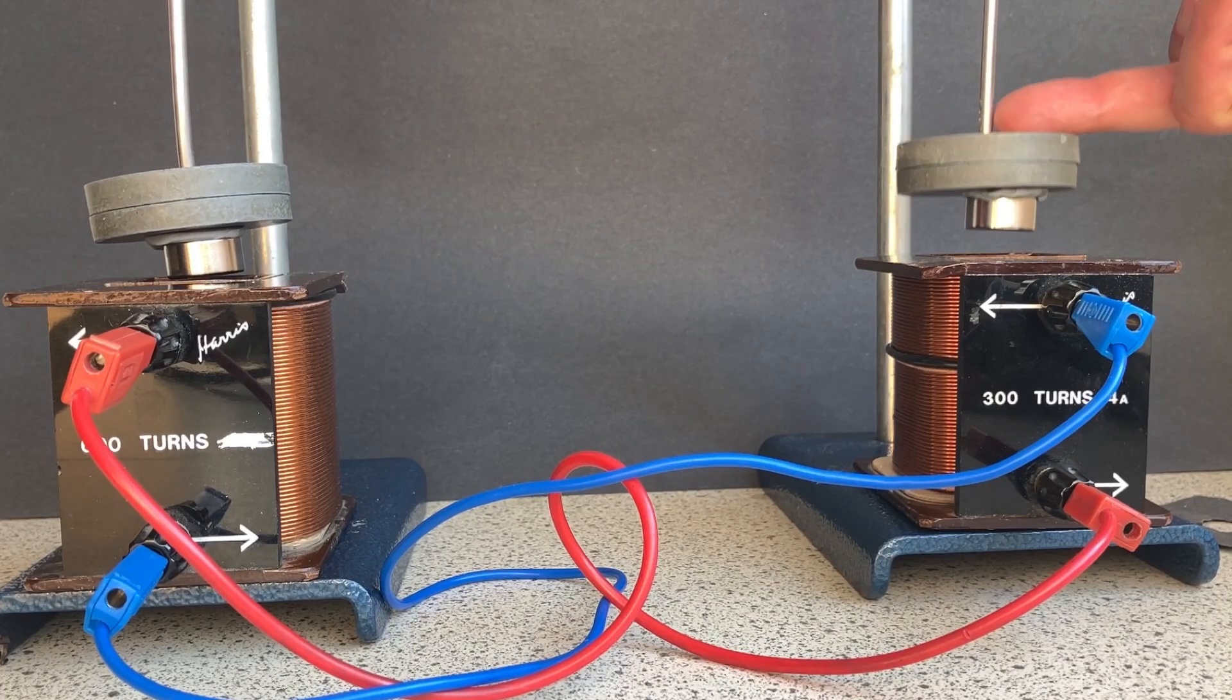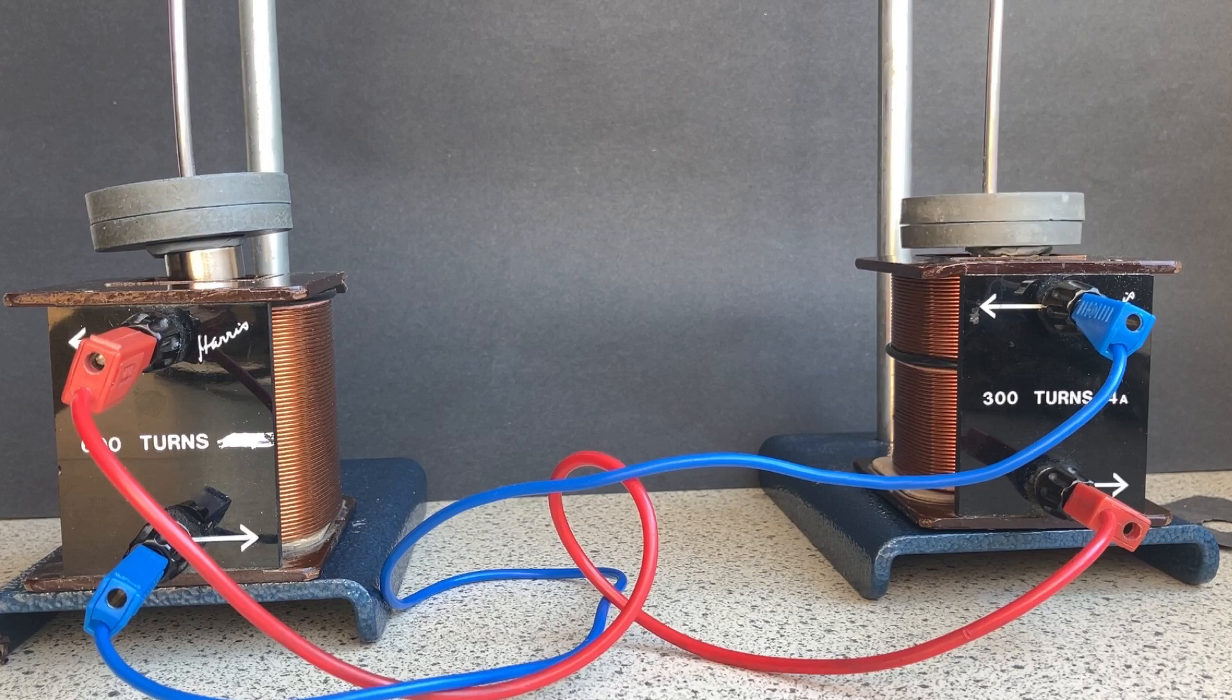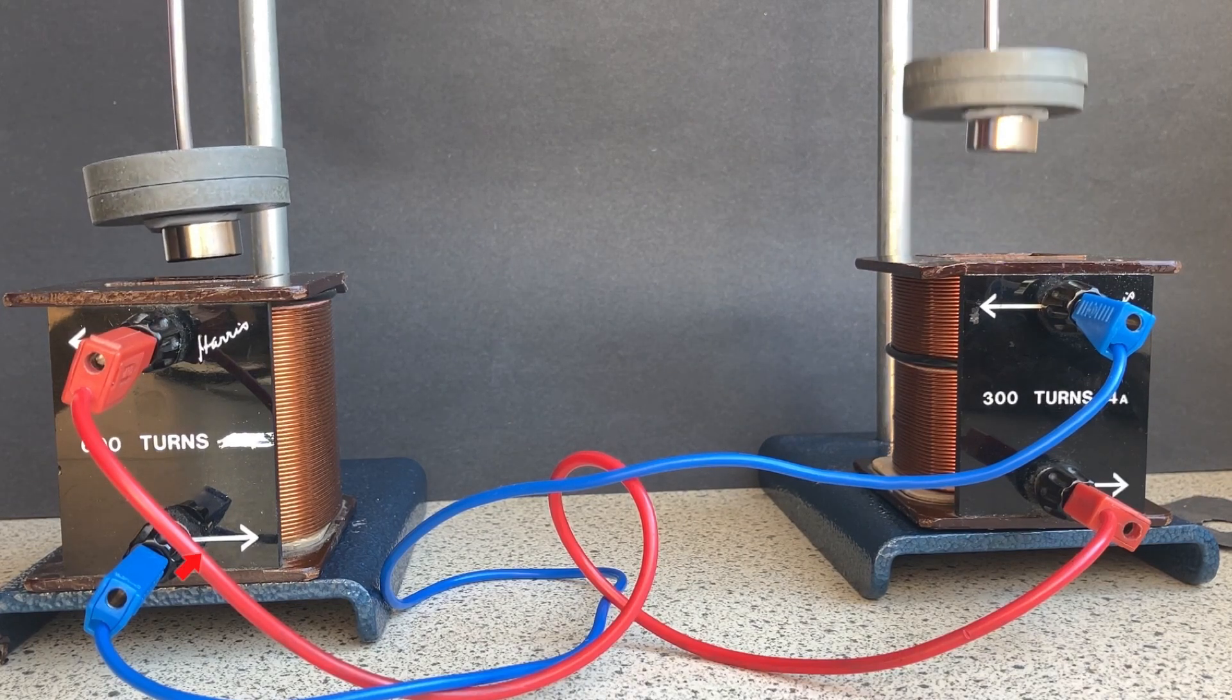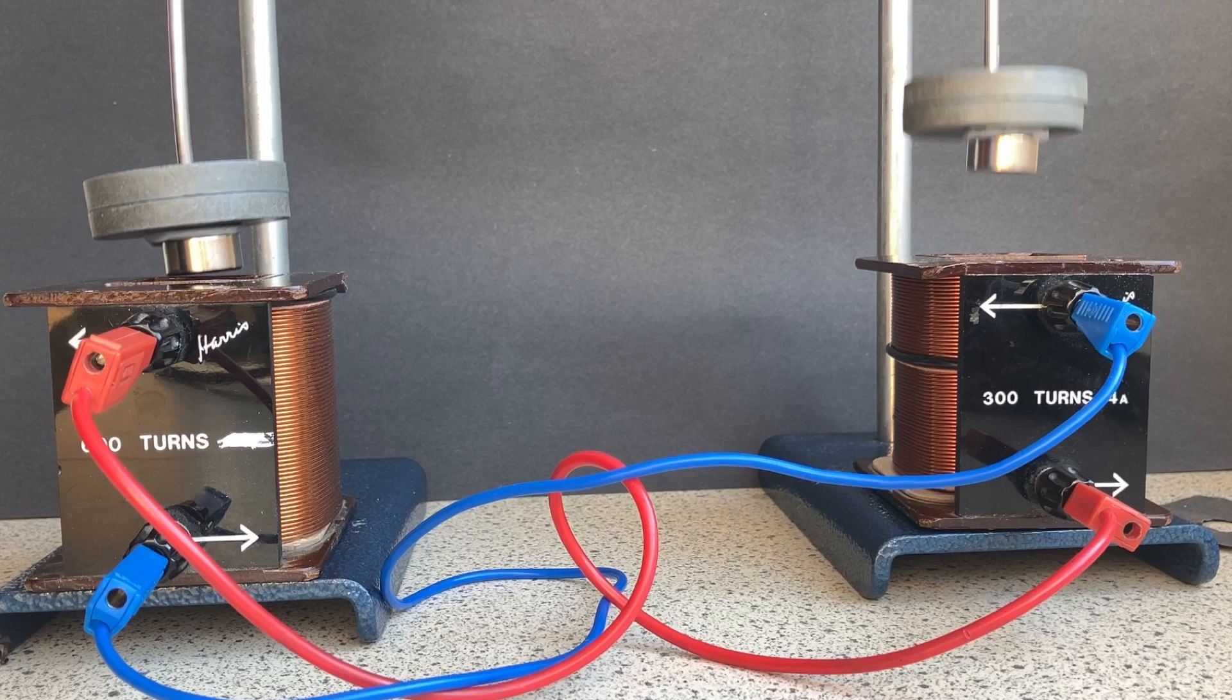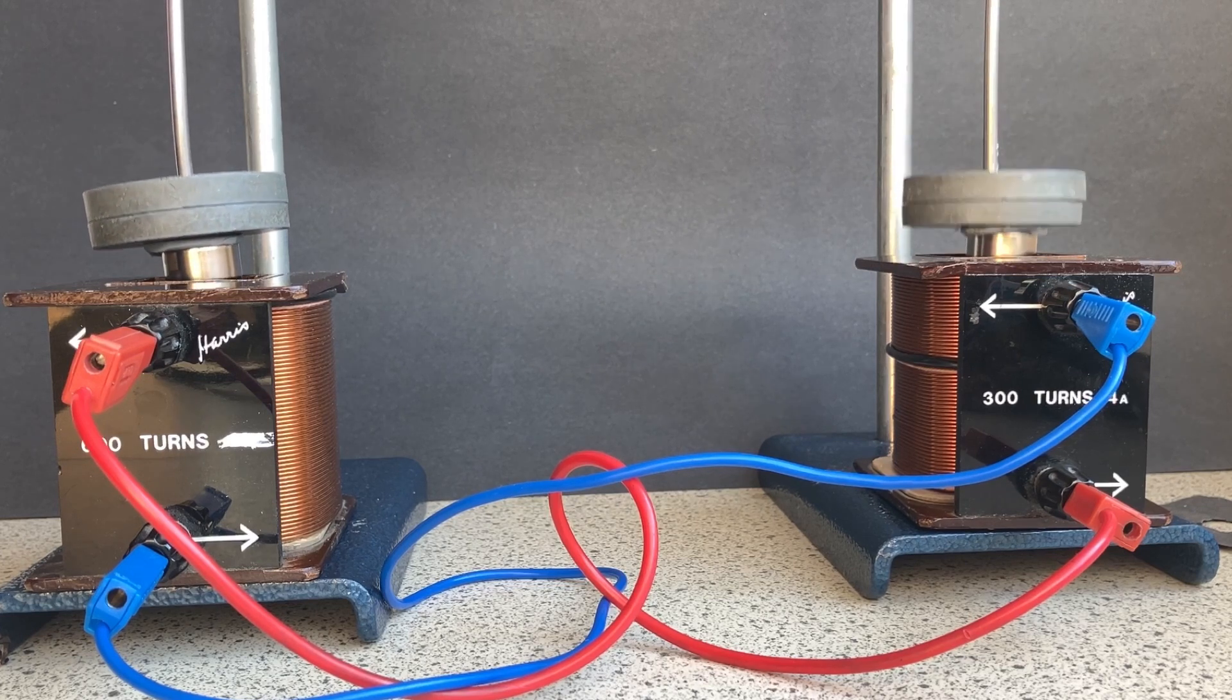This is a lovely physics demonstration where a magnet on the end of a mass on a spring oscillating above one coil causes electromagnetic induction, which turns the other coil into an electromagnet, which causes the magnet on the end of another mass on the spring to oscillate.